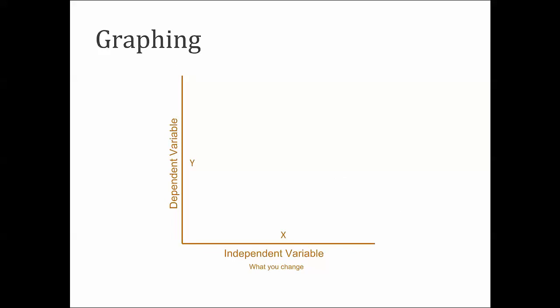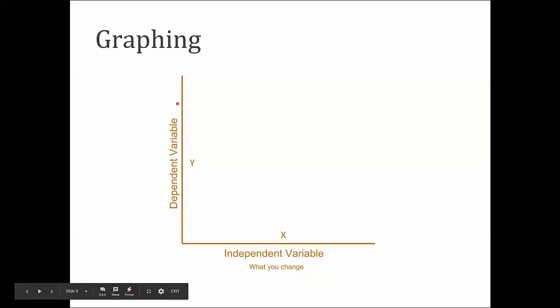Another thing we'll be doing this week is graphing. You have some graph paper in your manual. Set up your graph with the independent variable on the x-axis — that's the thing you change, the thing you have control over. The dependent variable goes on the y-axis — that's the thing that depends on the independent variable. Make sure the scale within an axis is uniform all the way across, with no major jumps in your numbers.